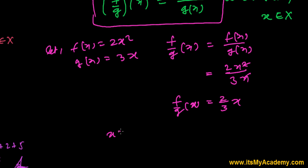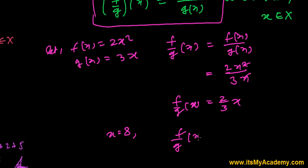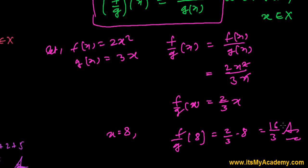Now if x equals, let's say, 8, then (f/g)(8) = (2/3) times 8, which gives us 16 over 3. That's our answer. This is how you find the ratio or quotient of two functions.